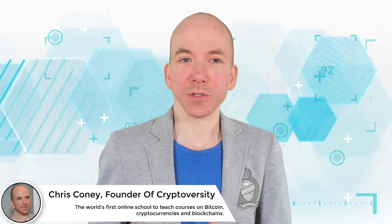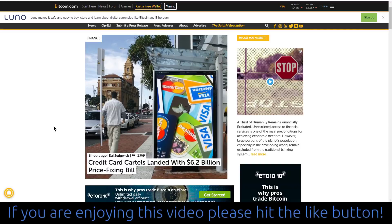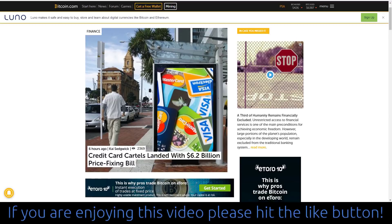Visa and MasterCard have just lost a lawsuit, landing them with a settlement bill of over $6 billion. This story was featured on Bitcoin.com. Here's the headline: Credit card cartels landed with a $6.2 billion price-fixing bill.